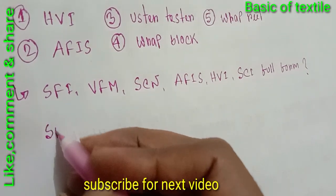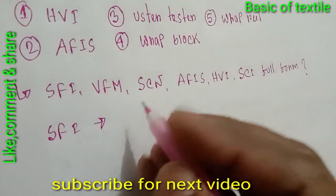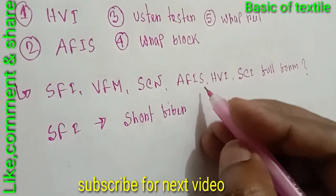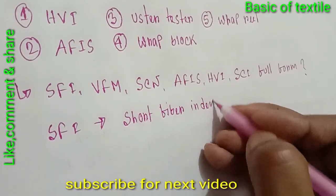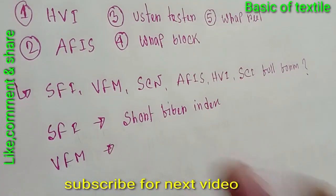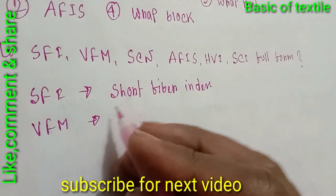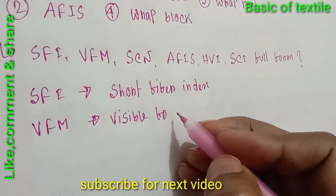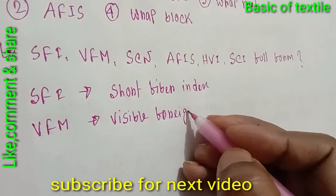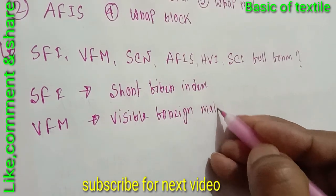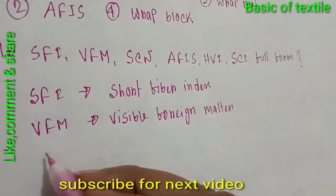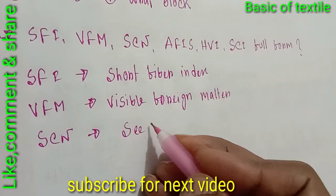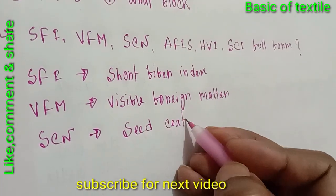First: SFI full form is Short Fiber Index. Then BFM stands for Visible Foreign Method. Then SCN means Sheet Code Neps.